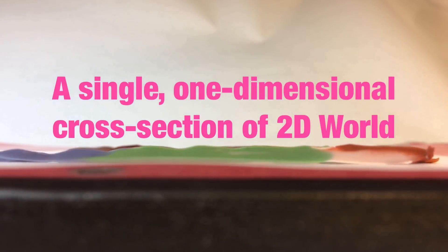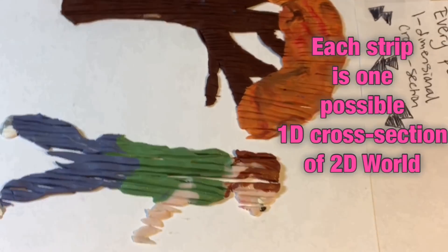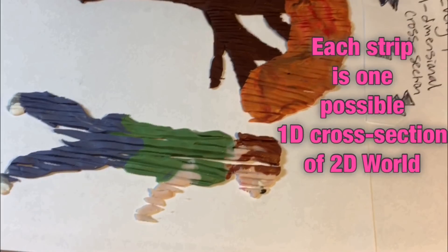Going back to our two-dimensional world, we would only be able to see one cross-section of any given object at a time. However, when we jump upwards into the third dimension, we can see every possible cross-section of the two-dimensional world all at once.